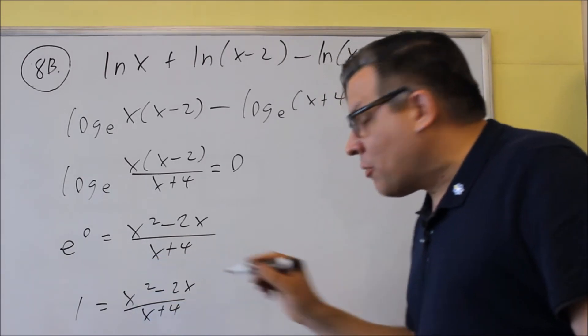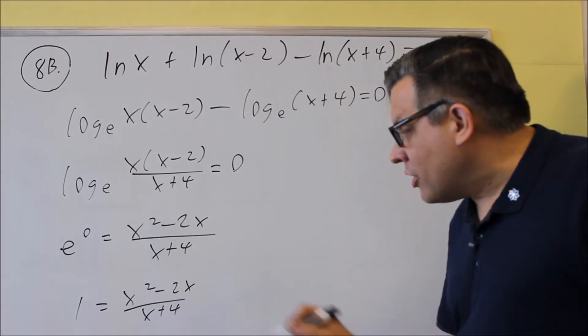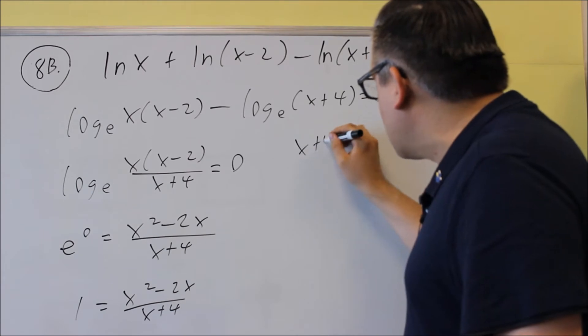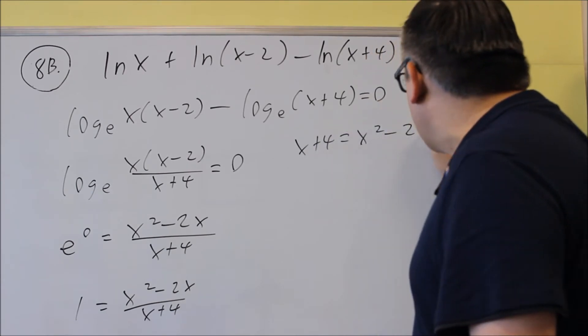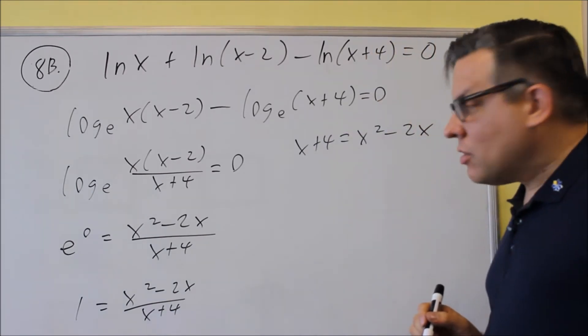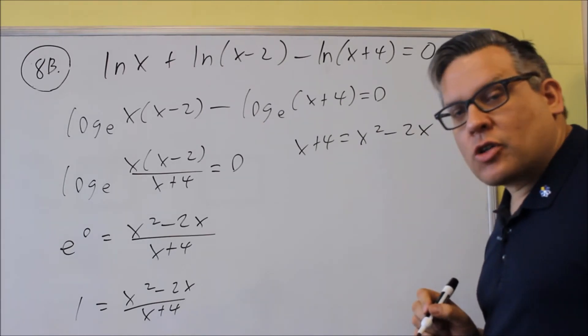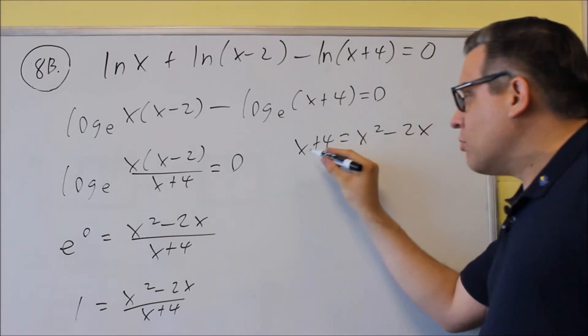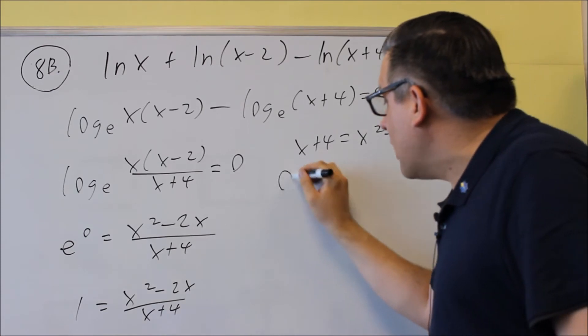We now need to multiply both sides by x plus 4 to get rid of the fraction. So we're going to do x plus 4 equals x squared minus 2x. And we need to set it equal to 0 because we have a quadratic. So we're going to move the x and the 4 over to the other side, and they change signs.